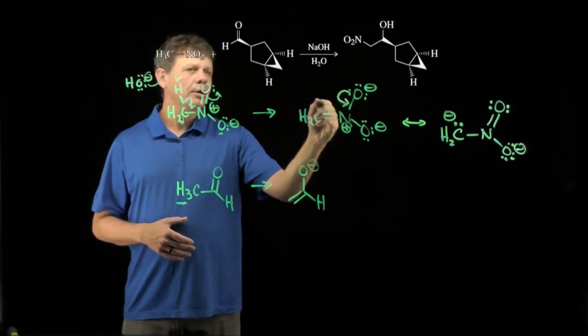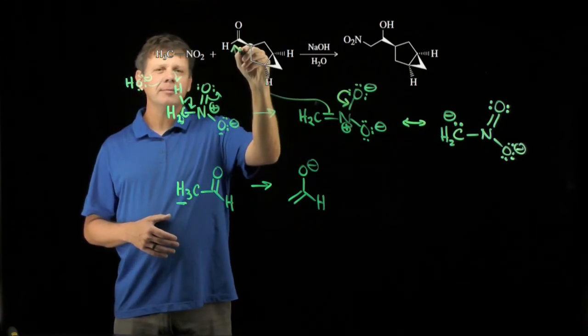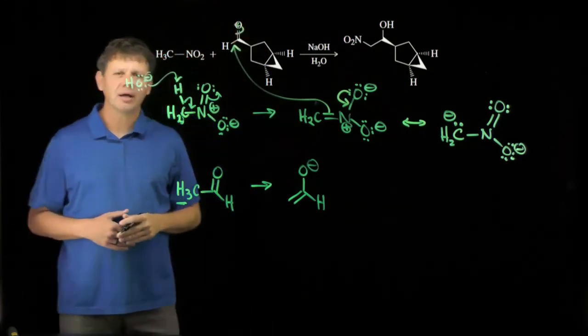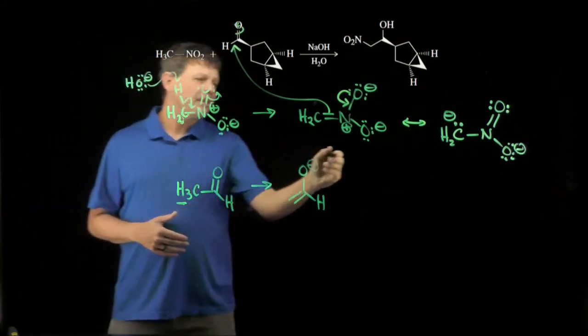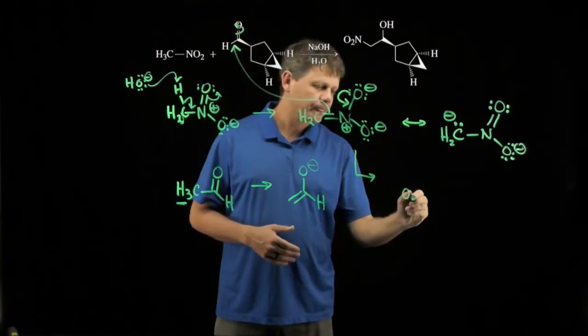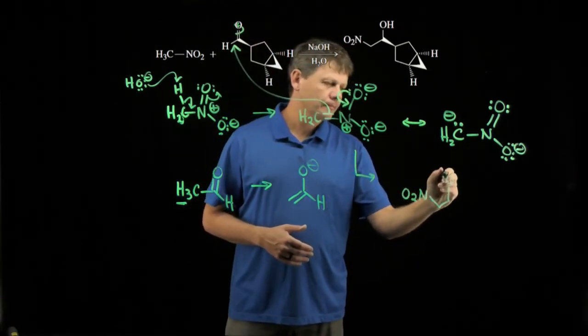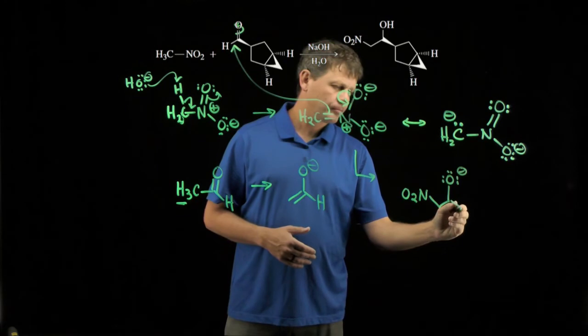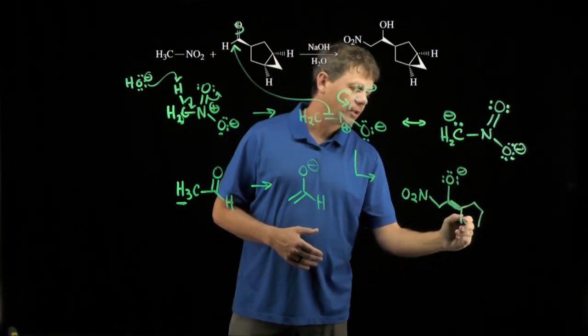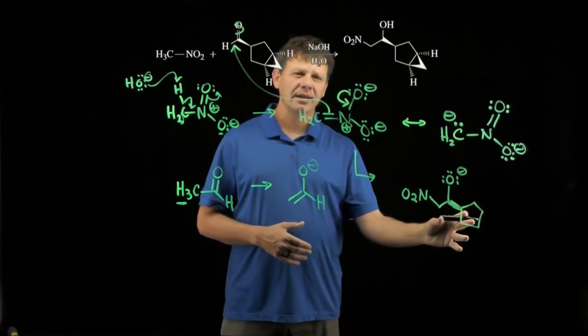These electrons come down, push the pi electrons to here, and then we'll move those electrons up onto oxygen, the way we usually do. That's going to give us an initial product that looks like this. All of the rest of this is just coming along for the ride, so we'll keep it drawn exactly as it was.